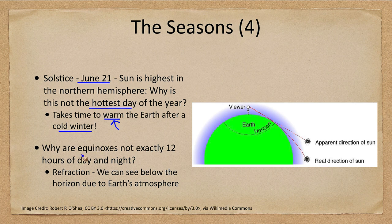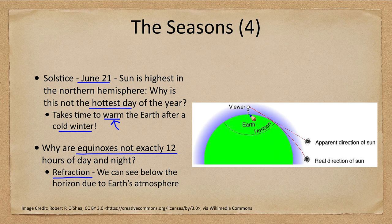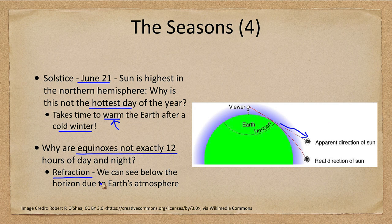We can also look at why the equinoxes are not exactly 12 hours. If you look at sunrise and sunset on the equinox, it should theoretically be 12 hours. However, what we find is that because of refraction, this is not the case. As seen in the image, our viewer standing on Earth watching the sunset — in reality, the Sun is a little bit below the horizon, but the bending of light through the atmosphere makes it appear that the Sun is above the horizon. So the times will always be a little off because of refraction. Had the Earth no atmosphere, the days would be exactly 12 hours long on the equinoxes.